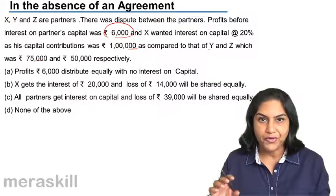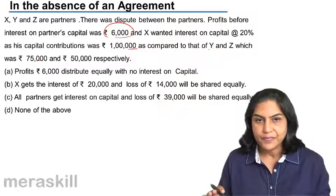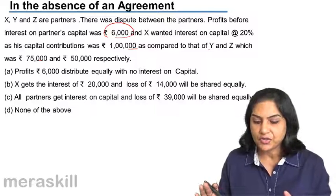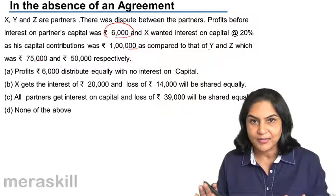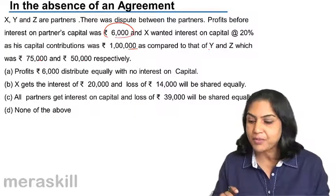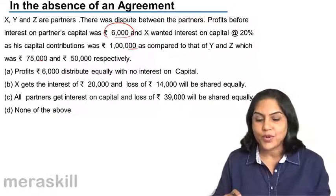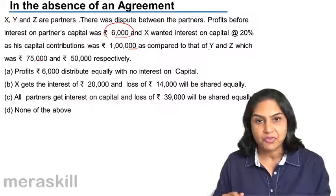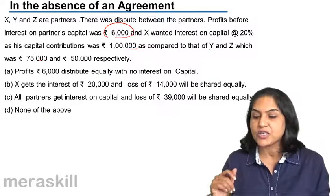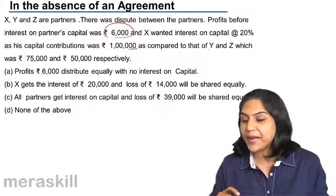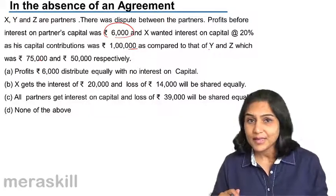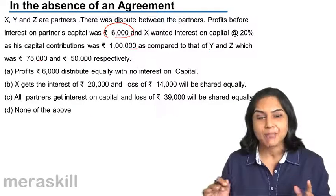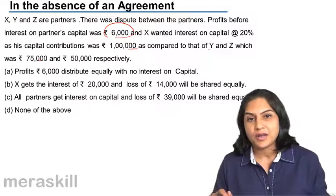There is a profit of 6,000 rupees. How are we going to distribute this profit of 6,000 between X, Y, and Z? X has contributed the maximum amount of capital, that is 1 lakh. Y and Z have contributed 75,000 and 50,000. X wants an interest of 20% on his capital. How should this be distributed in the absence of an agreement?